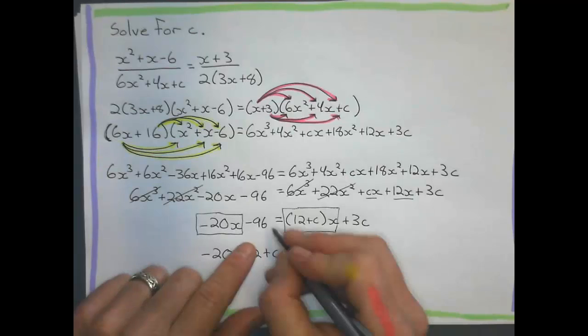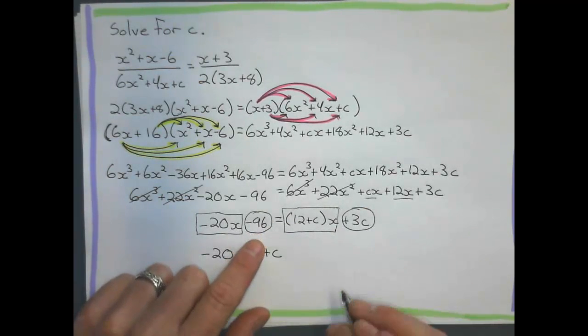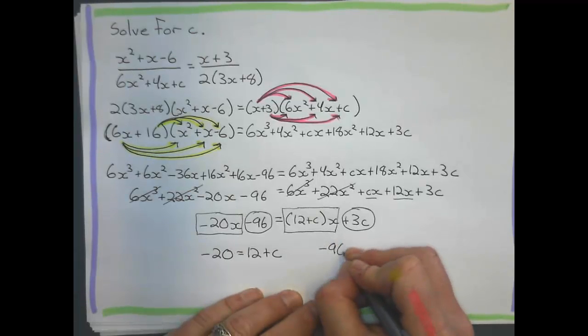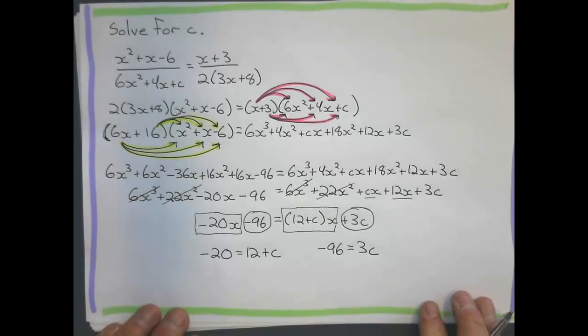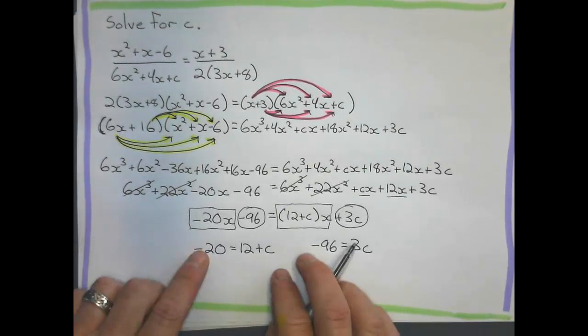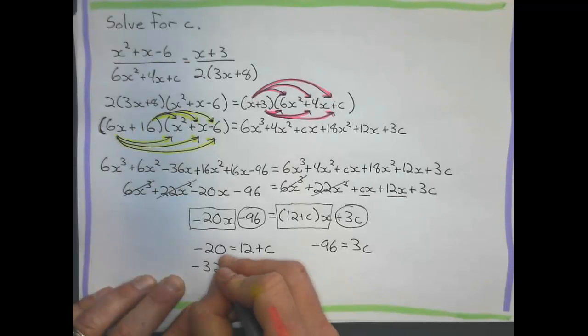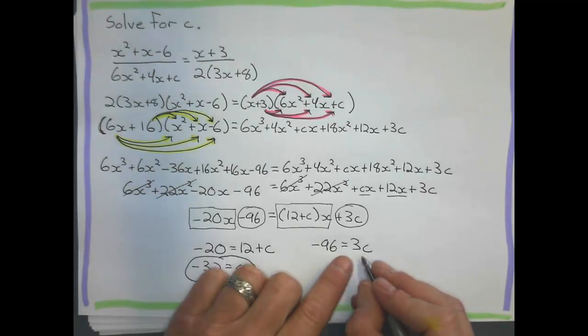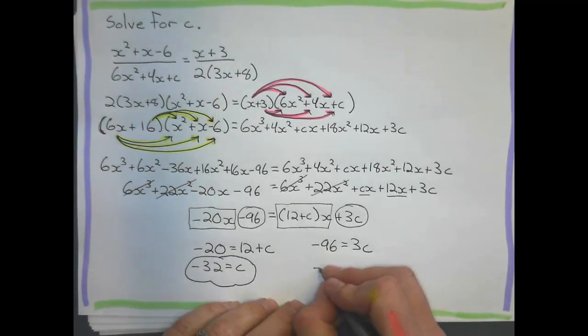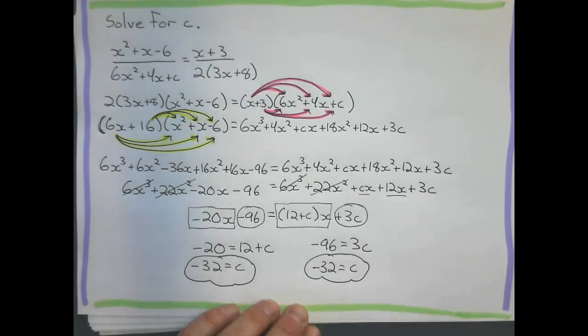Or, you could go about it and look at negative 96 and 3c. Negative 96 must equal 3c. Either way, you solve for c here. You subtract 12 to the other side and you get negative 32 equals c. Or, you could divide by 3 here. And if you, negative 96 divided by 3 is negative 32 as well.